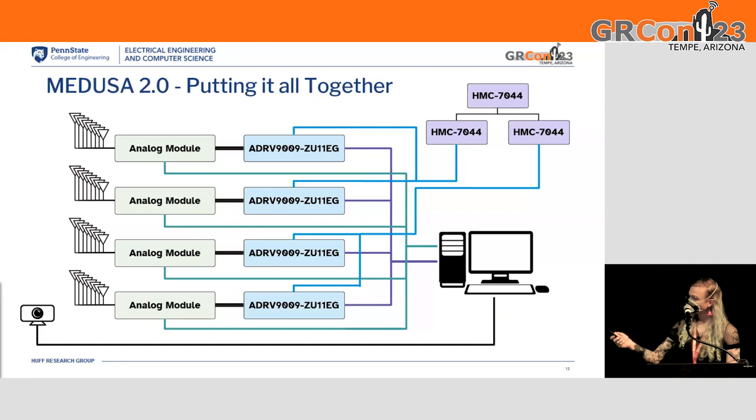And then altogether, we've got, yeah, four of those modules. So, in total, 32 antennas. And then we're also doing clock distribution so that we can have a synchronized clock across those four SDRs.